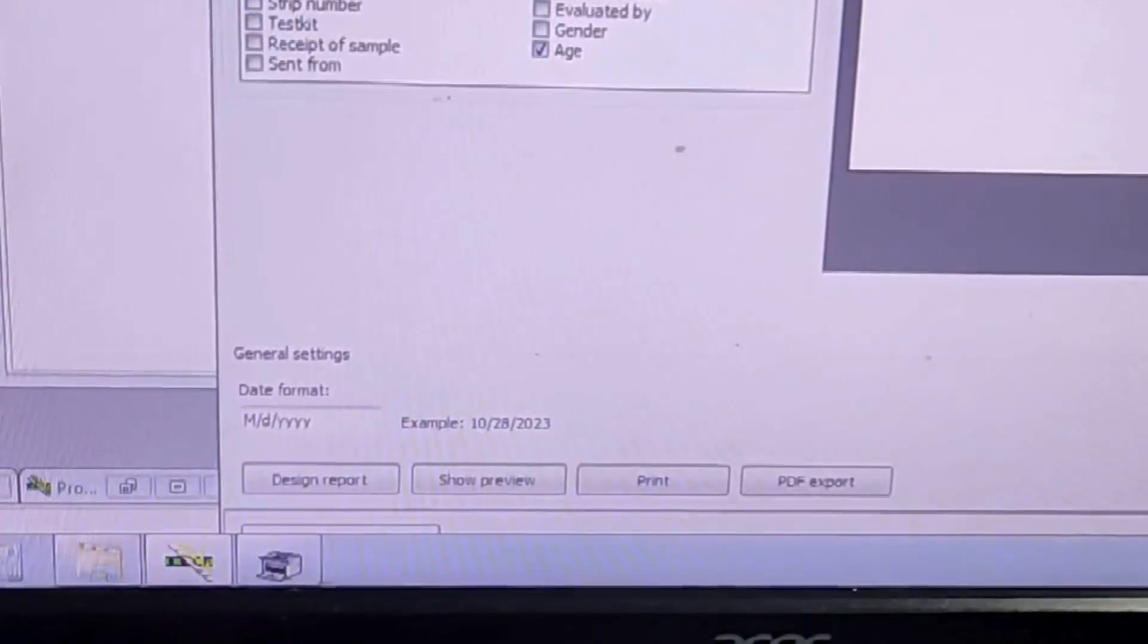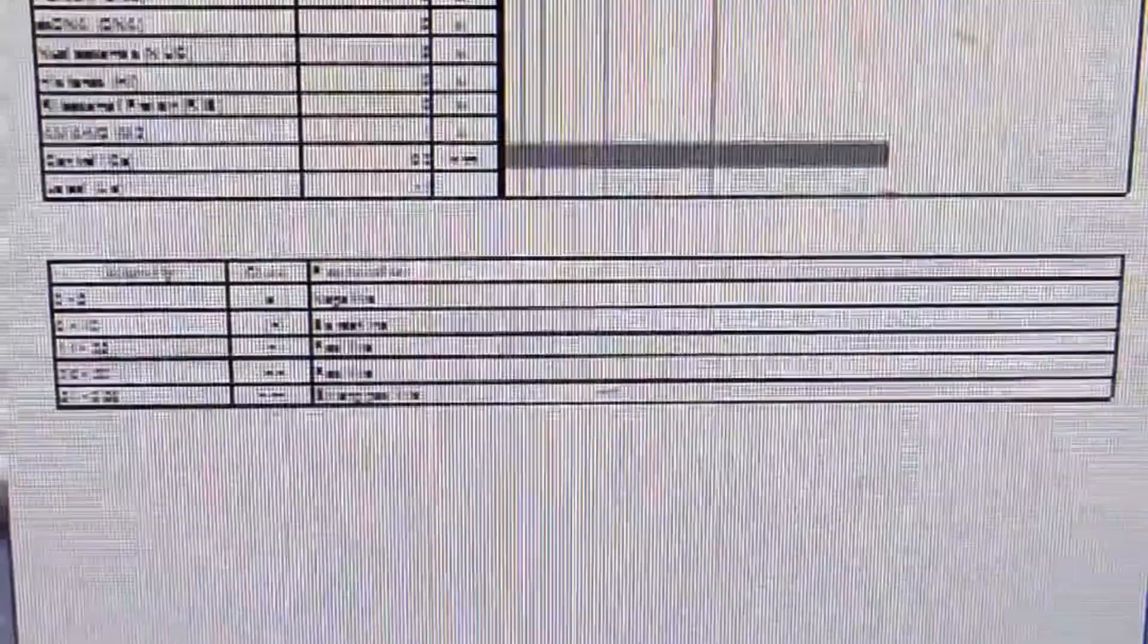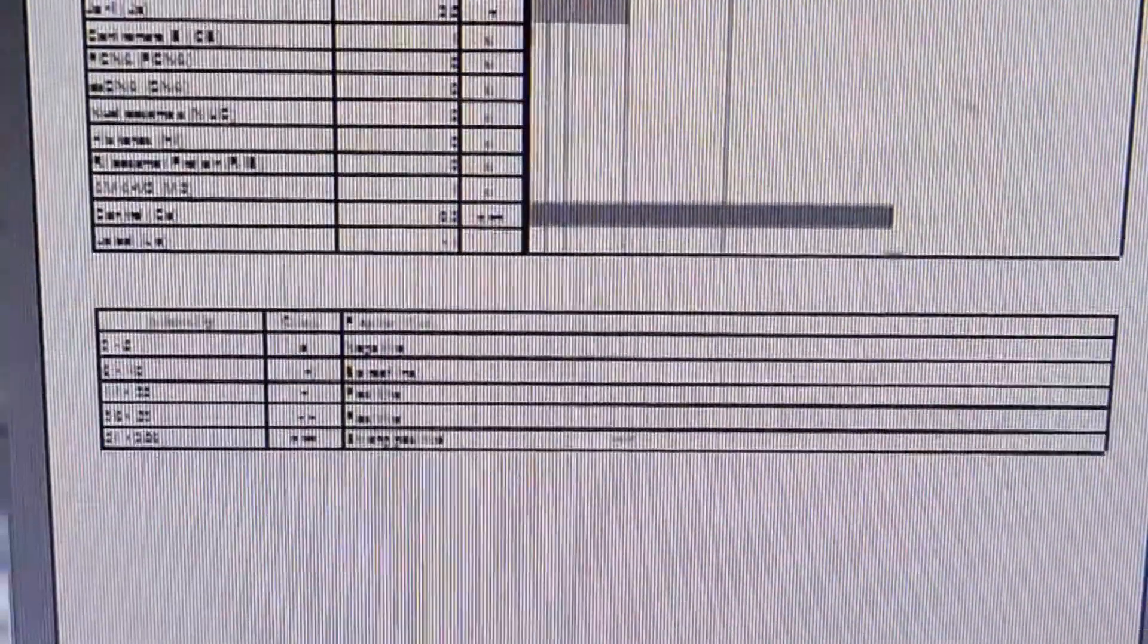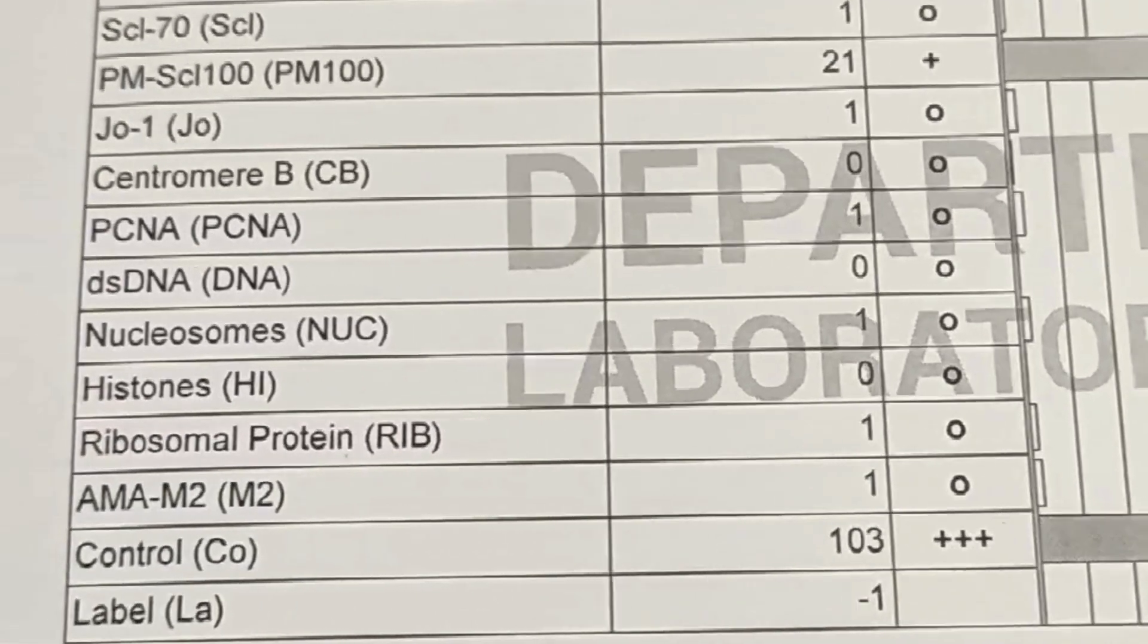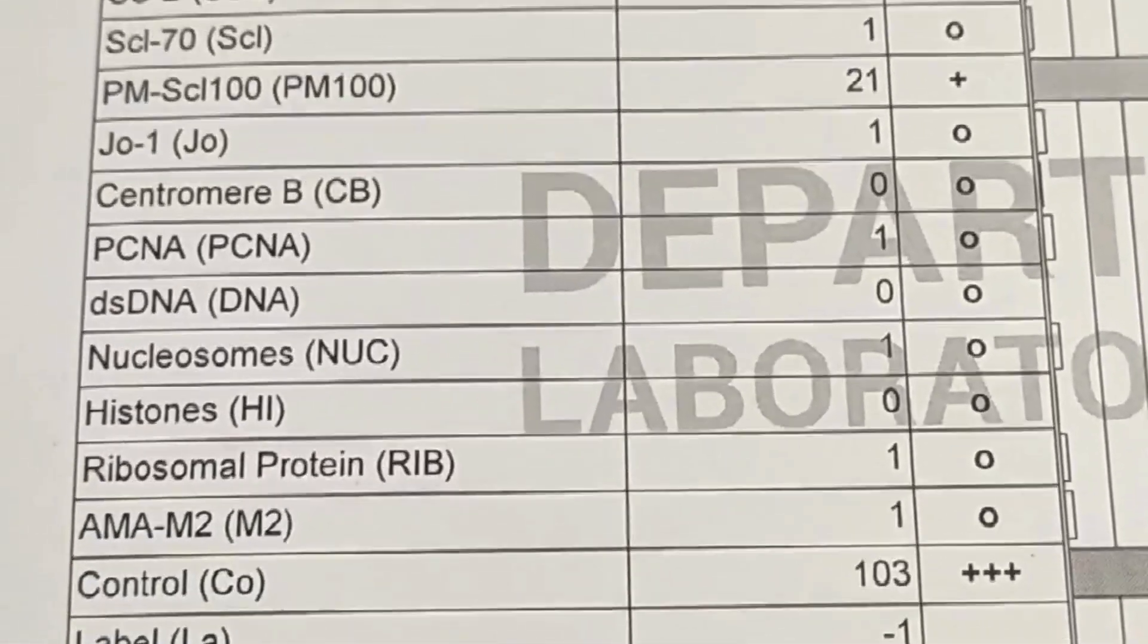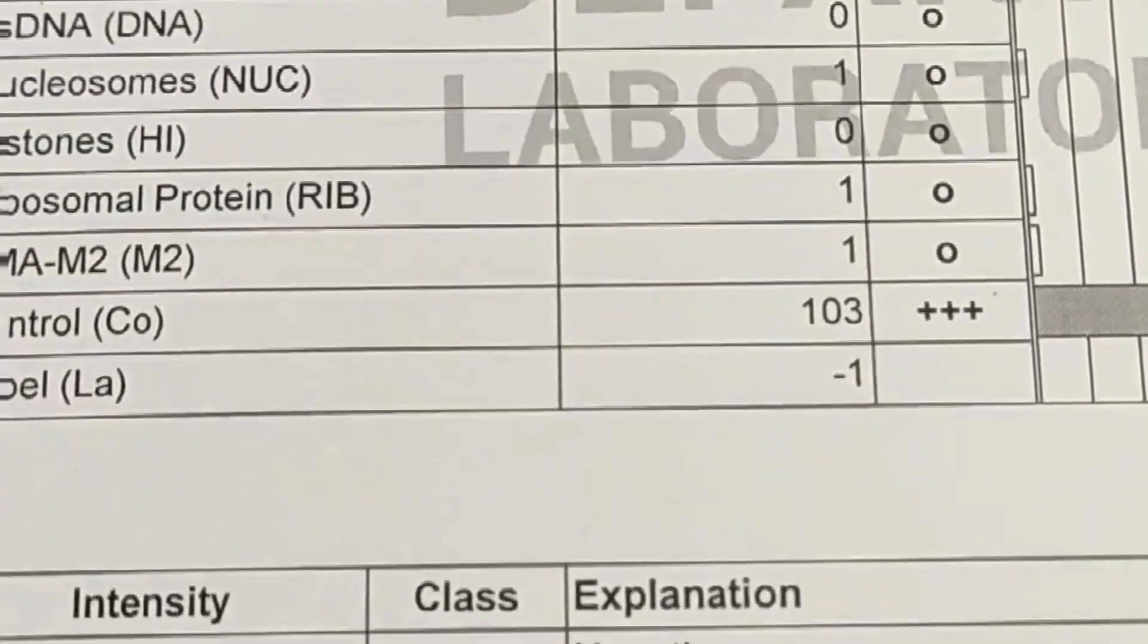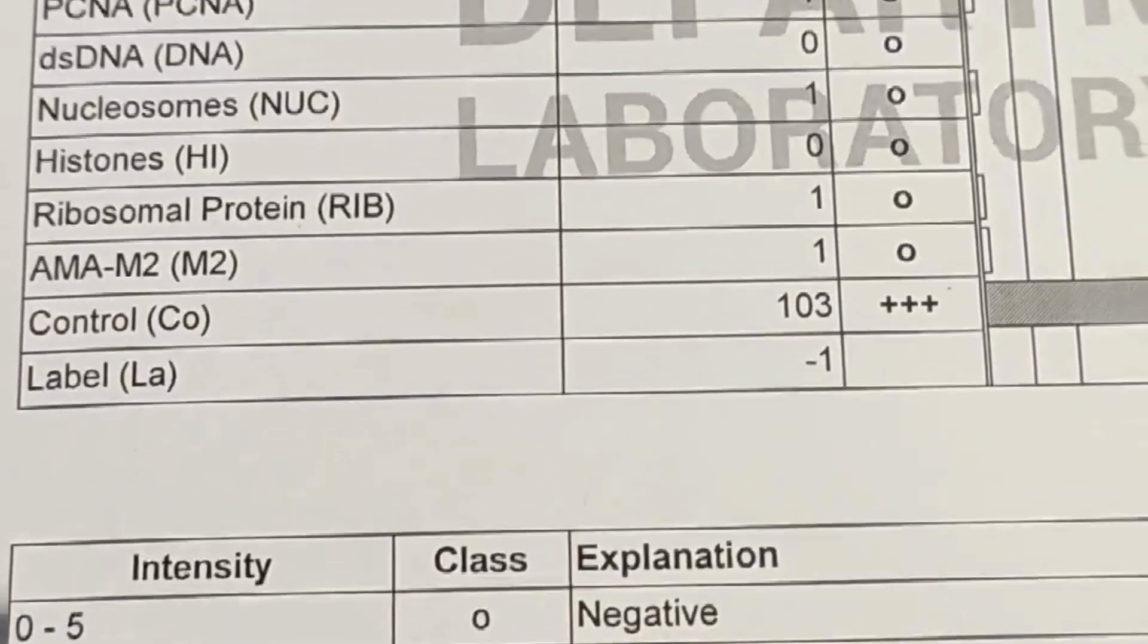We scan the test strips from the Euro Immune software where it scans the bands and based on its intensity we will get to know how far it's positive. Since it's a qualitative analysis, we will not be knowing the exact titer, but it does provide the qualitative titer as one plus, two plus, and three plus for the extreme positivity. It will provide the antibody titer corresponding to these 15 nuclear antigens like you can see here in this report.